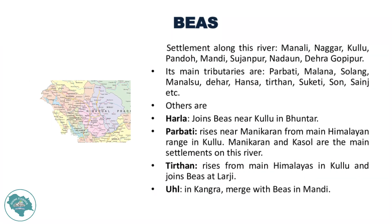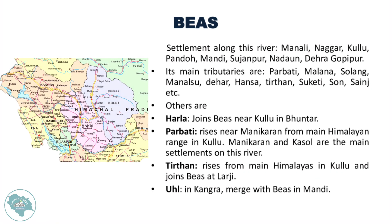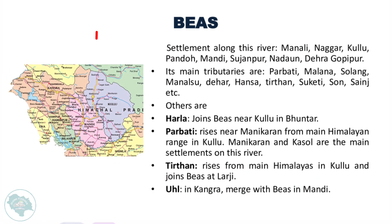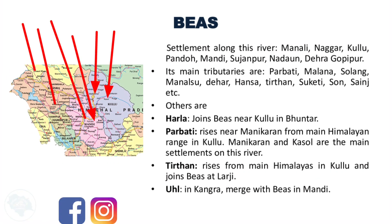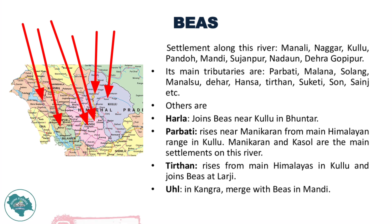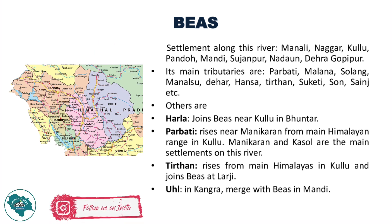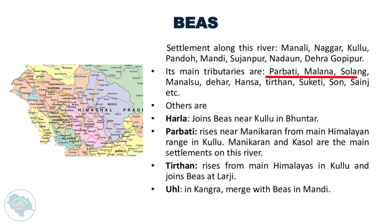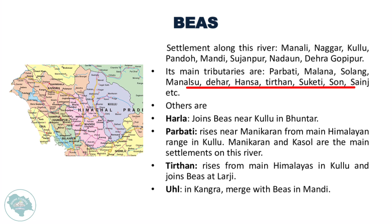Settlements along Beas include Manali, Nagar, Kullu, Pandu, Mandi, Sujanpur, Nodon, Dehra, and Gopipur. Its main tributaries are Parvati, Solang, Dehar, Hansa, Tirthan, Son, Sainz, Suketi, etc.